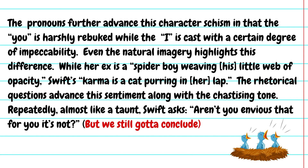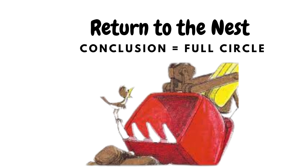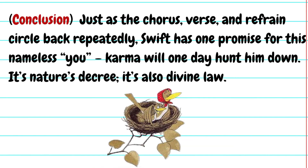'The rhetorical questions advance the sentiment along with the chastising tone — repeatedly, almost like a taunt, Swift asks: aren't you envious? — that for you it's not right.' So we've got all of our promises kept — quotes and paraphrases for everything promised. Now we need to conclude: return everything to the nest and go full circle. 'Just as the chorus, verse, and refrain circle back repeatedly, Swift has one promise for this nameless you — karma will one day hunt him down. It's nature's decree. It's also divine law.'